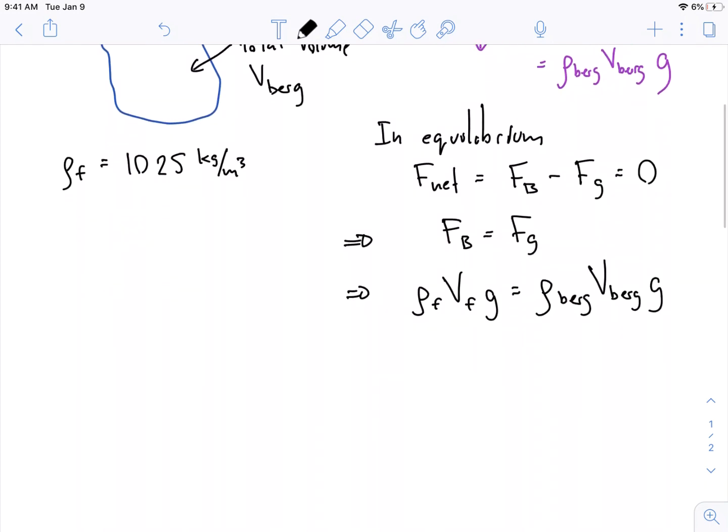Okay, and the g's cancel out, right. And so we're left with this formula: rho-f times Vf is equal to rho-berg times Vberg.